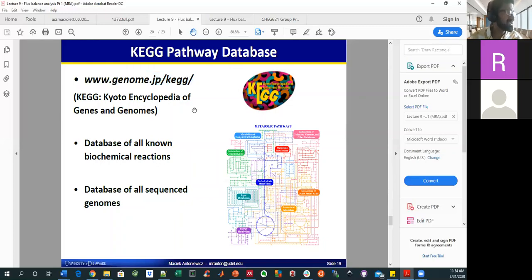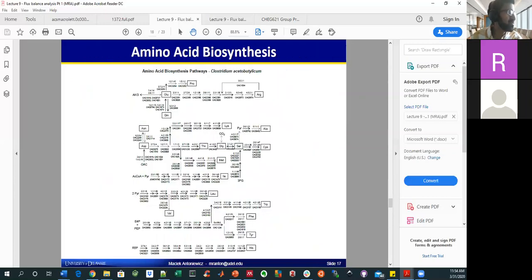The KEGG database is one where you can visualize different pathways. You won't necessarily see it in this format at first, or maybe you will. They usually have each biosynthetic pathway broken out. And I imagine what Machek may have done here is copy and paste several images together.